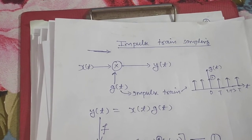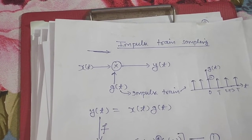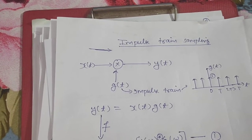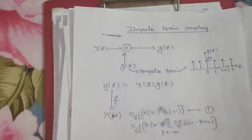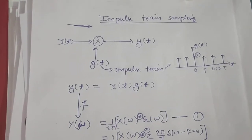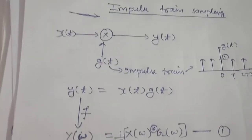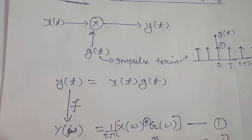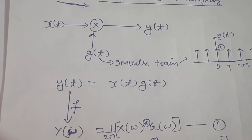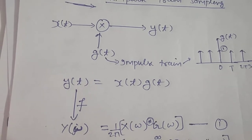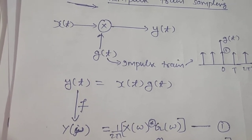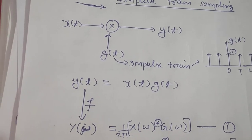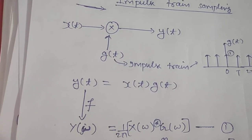This is how we do impulse train sampling. We will see that y(t) is actually the sampled version of x(t). So here y(t) equals x(t) times g(t), and if we take the Fourier transform, then Y(ω) will be 1 upon 2π times X(ω) convolved with G(ω), because multiplication in the time domain results in convolution in the frequency domain.